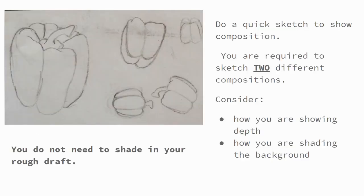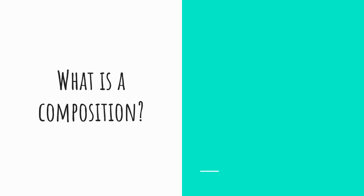In the composition boxes, you're going to draw something that looks a lot like this, except you're going to do two of them. You'll notice in bold it says at the bottom: you do not need to shade in your rough drafts. This is just going to show me that you understand how depth works and that you have a rough idea of where you're going to place these fruits and vegetables.